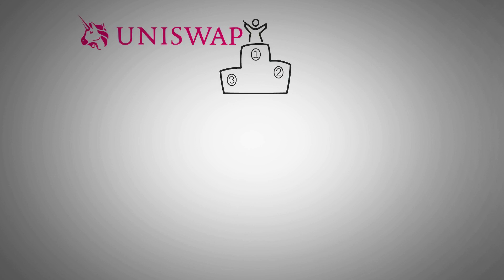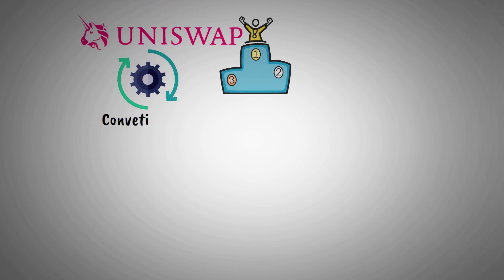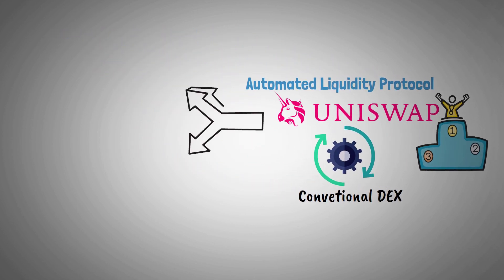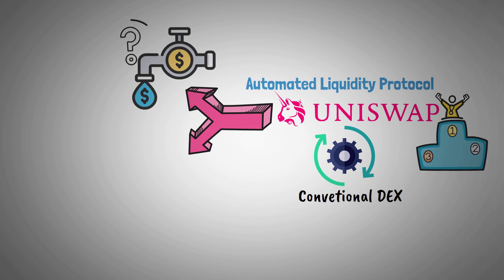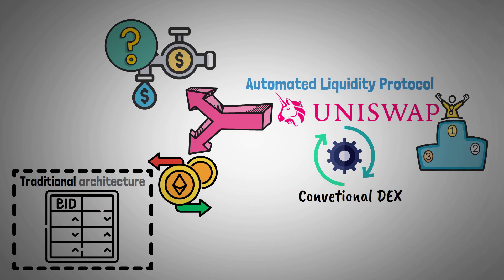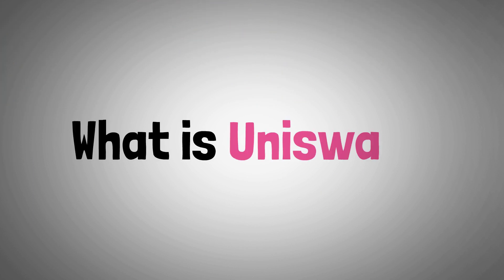Uniswap, the leader in DeFi, wants to transform the conventional DEX with its automated liquidity protocol. This implies that Uniswap can simultaneously address liquidity concerns and enable token exchange without depending on the traditional architecture of an order book method. Let's start with what is Uniswap.